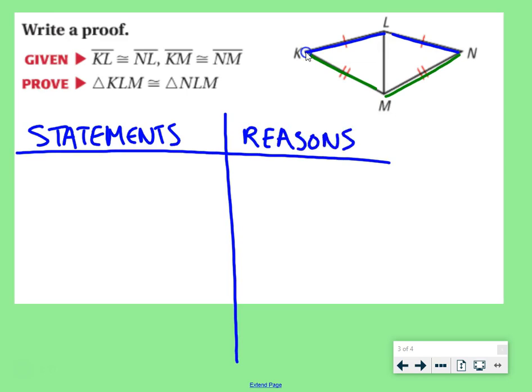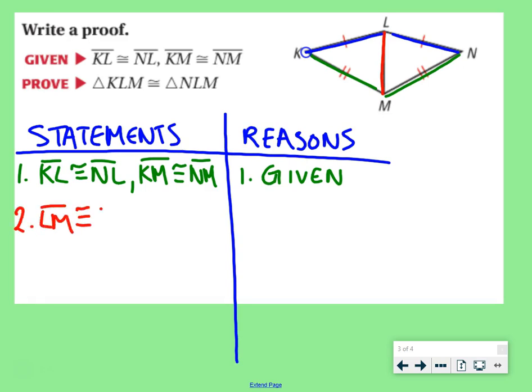First off, let's just start by listing off our givens. One, we are given that KL is congruent to NL, and KM is congruent to NM. We can put them on the same line. They are both given to us. Now we know that two sides of our triangle are congruent. We need that third side, which is LM. Since it's on both triangles,